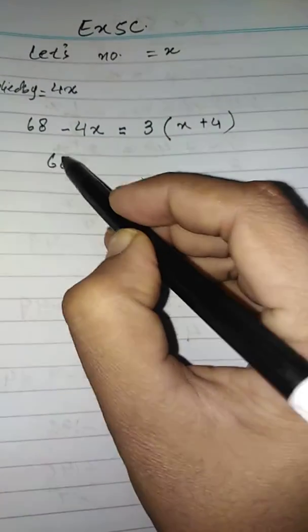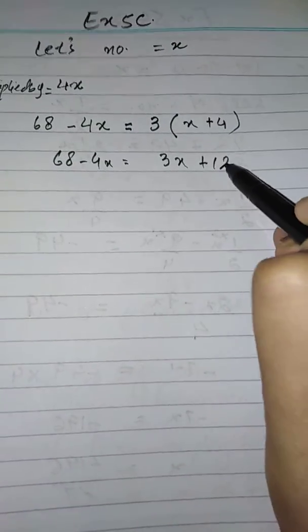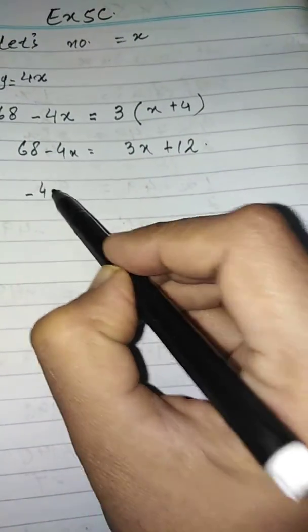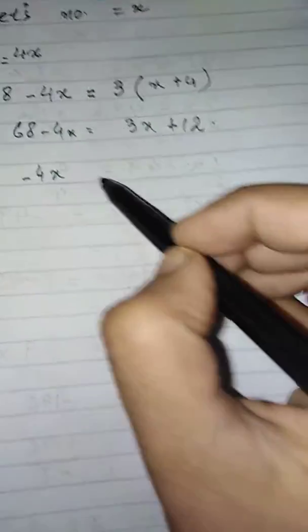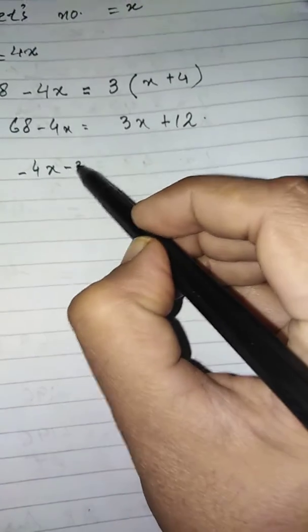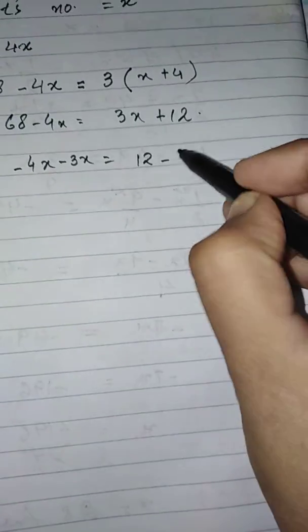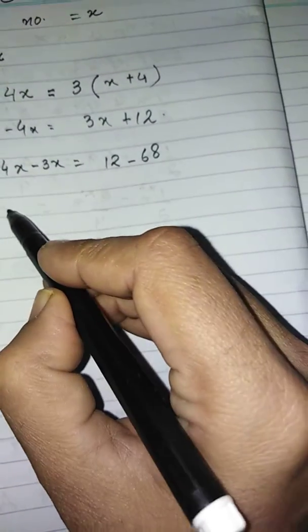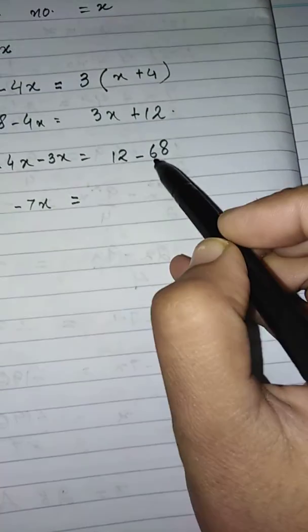Now we solve it. Expanding: 3x plus 12. We rearrange — moving 3x to the left side, where it was adding, so on this side it will subtract. We get 4x minus 3x equals 12 minus 68, which gives x equals negative 56 divided by... wait, that is 68 minus 12.